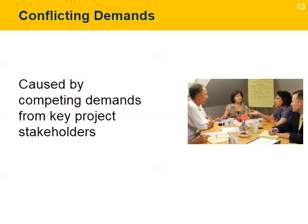Conflicting demands. Key stakeholders with high influence in the project can create conflicting demands through requests for changes and access to resources. This creates conflict with team members who may want to satisfy the needs of the stakeholders. For example, a stakeholder might request changes in the scope of the project; while the request might be valid, it will add more work to the team. Project leaders can help resolve this conflict by communicating to the team and key stakeholders the process for change requests and other requirements from the team.